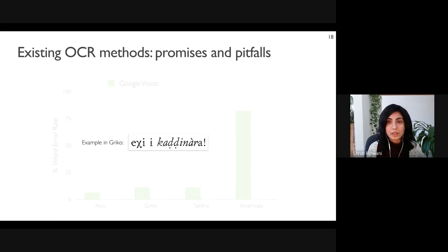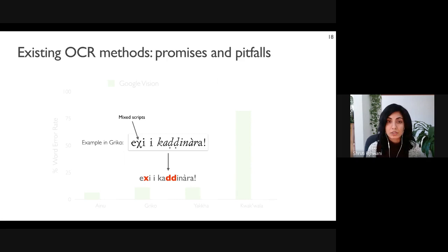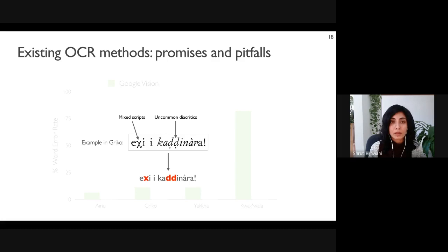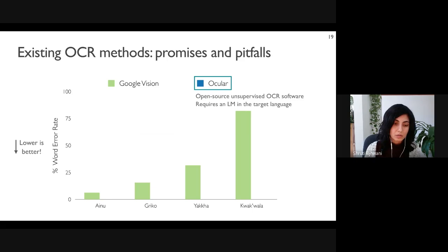Even for languages where the model performs well, analysis revealed common errors. One major source of errors is that the system isn't able to handle mixed scripts within a single line — for example, where a Greco word uses both the Greek and Latin alphabet. Additionally, lower-resource languages often use uncommon diacritics to represent unique sounds that the system hasn't encountered in the high-resource languages it was trained on.